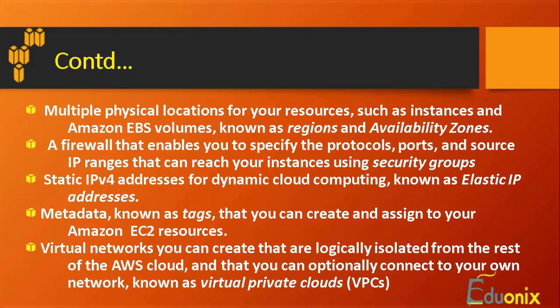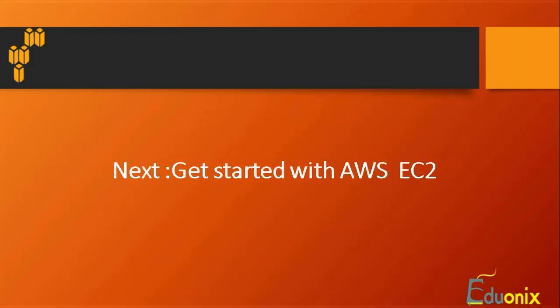You can create virtual networks - dividing a network into multiple logical divisions or keeping a common network so everyone connects with each other. Optionally, if you want to connect your own network using a private connection, you can use a Virtual Private Cloud (VPC). These are the features of EC2, and in the next session we will configure it practically.